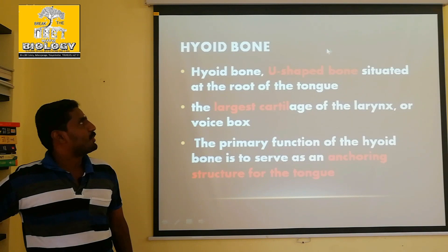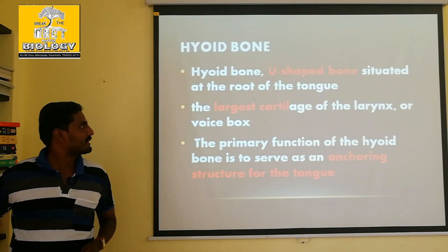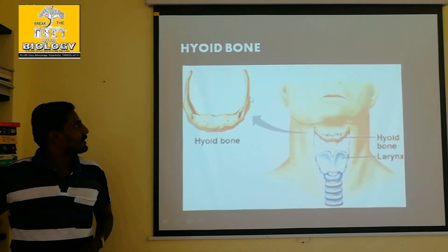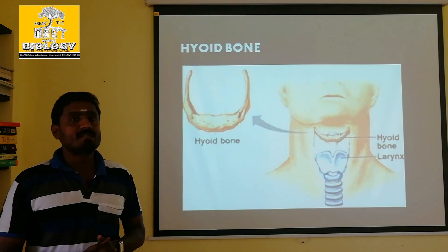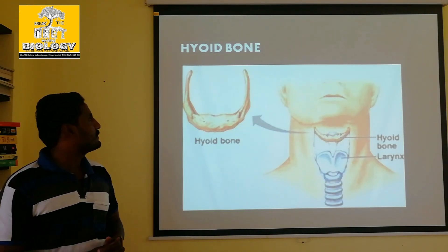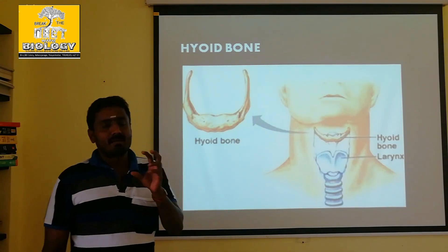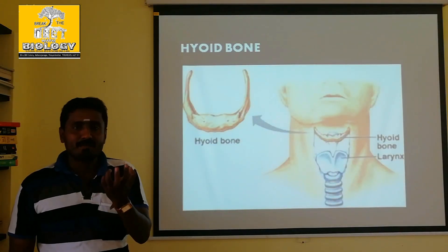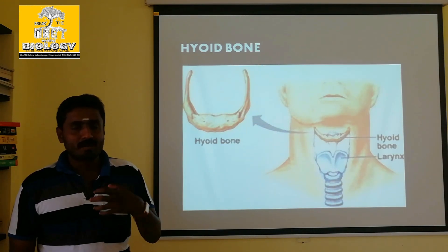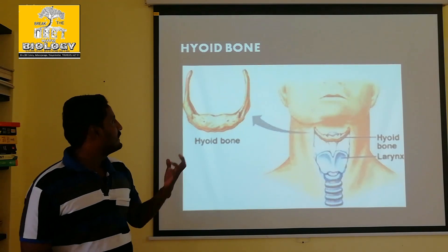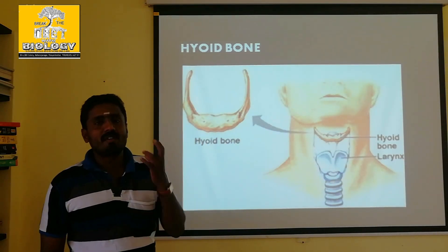The hyoid bone is an option. The hyoid bone is a U-shaped bone. The largest cartilage present in our body — the hyoid bone is like a stick. If you have a tongue, it is anchored to the hyoid bone in the neck region. The hyoid bone is a bone which is helpful for the fixation of our tongue.